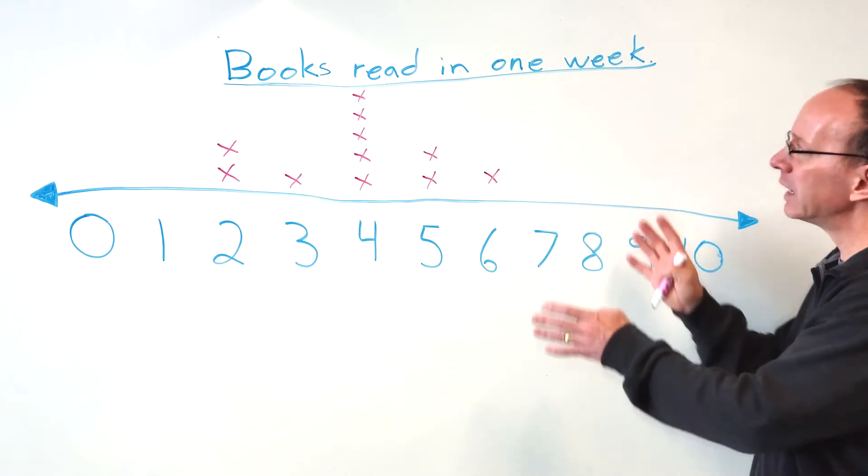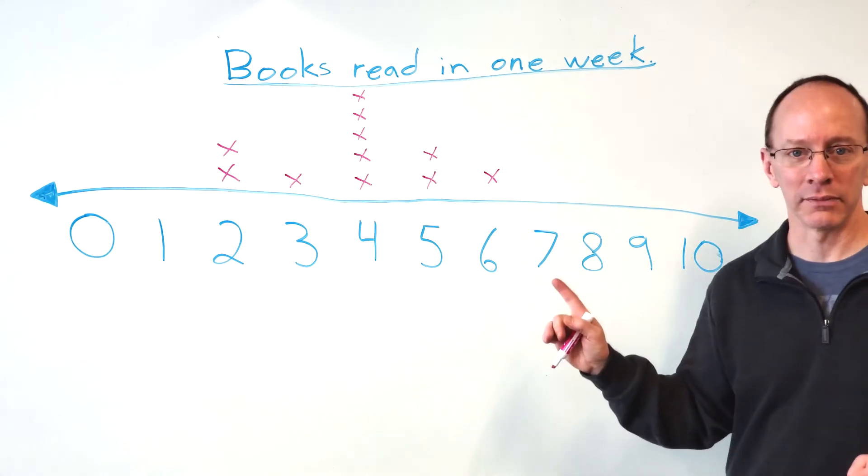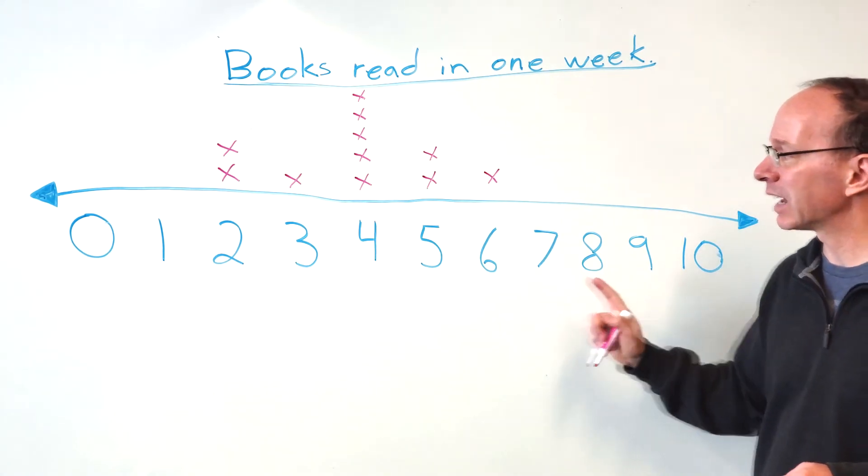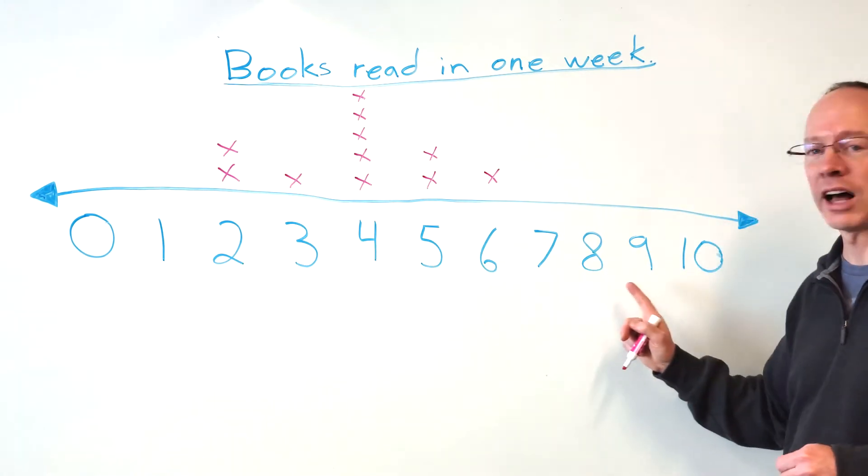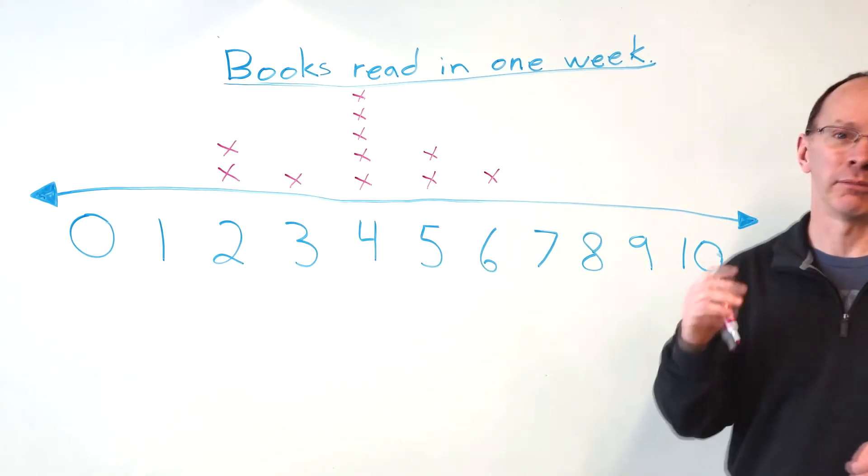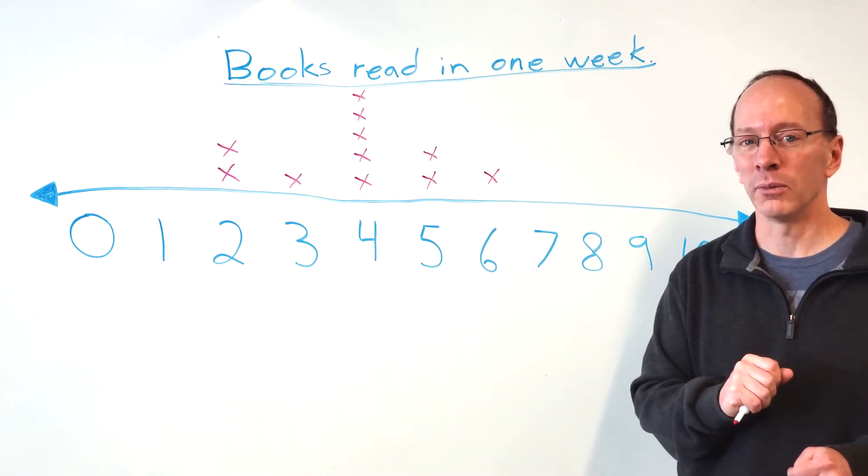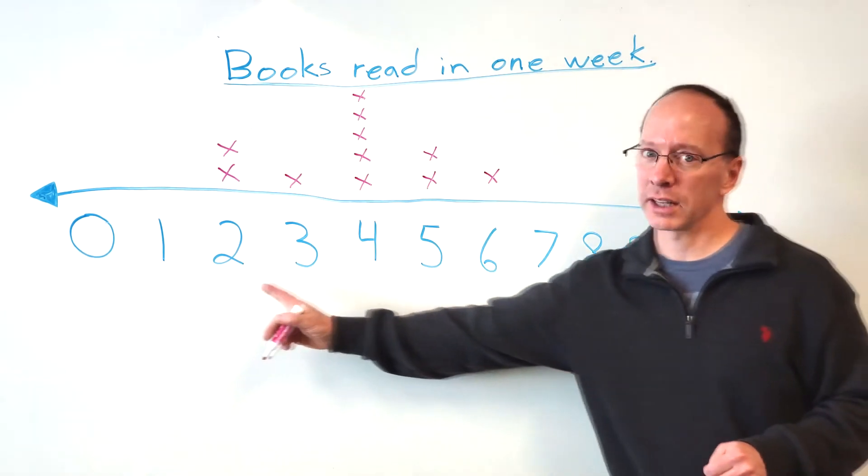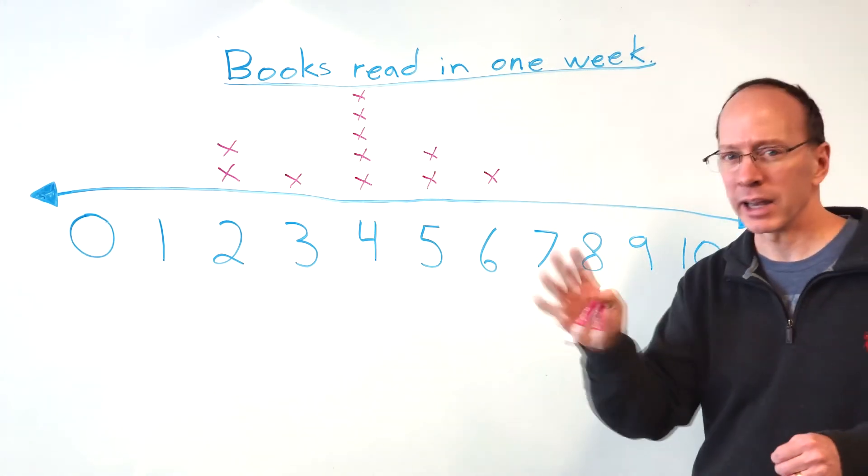Now when you're making a line plot, you want to choose these numbers appropriately. So that means I probably did not want to make a line plot that went from zero to a thousand. I don't think I'd have many students in second grade read a thousand books in one week. So you want to choose this information here wisely and try to plan it out.